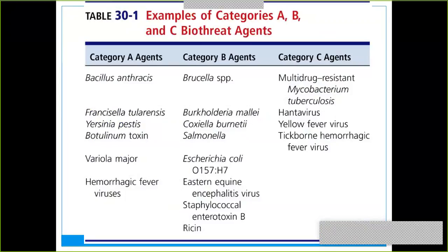Category A includes anthrax, Francisella, Yersinia, botulism, smallpox, and hemorrhagic fever viruses like Ebola and Marburg. Category B includes Brucella, Salmonella, E. coli O157, and ricin toxin. Category C includes tuberculosis and some other viruses. Category A is the most impactful, down to C which is the least impactful out of the bio threats.